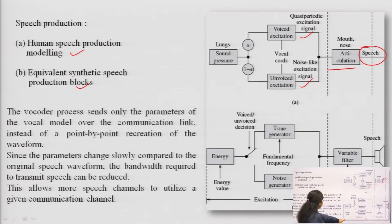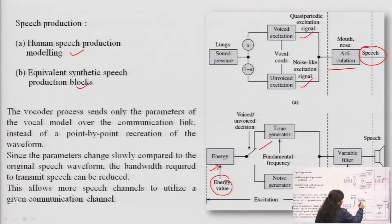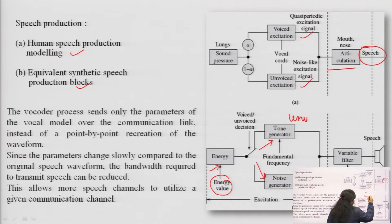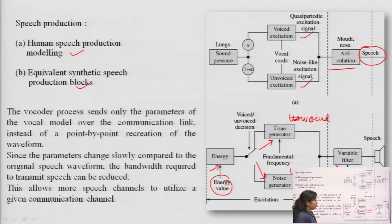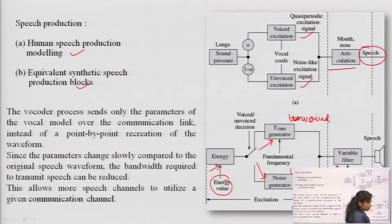The equivalent synthetic speech production model includes an energy value signal applied to a tone generator and a noise generator, which produce the voiced data and unvoiced data respectively. A variable filter is used at the output, where different filter coefficients are applied so that we can find out various parameters from that system. Then the speech signal can be heard from the loudspeaker.